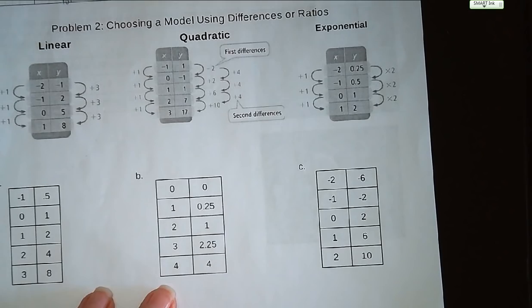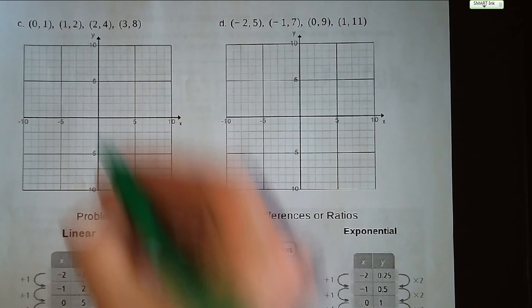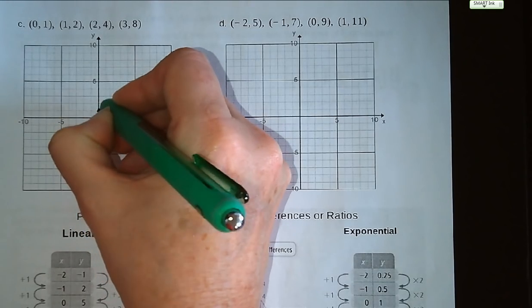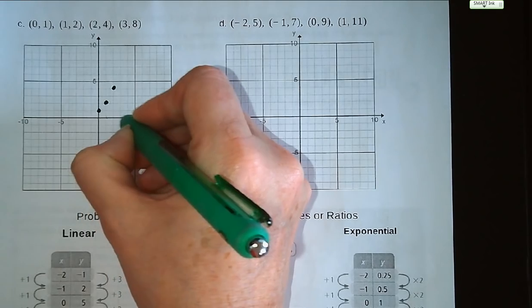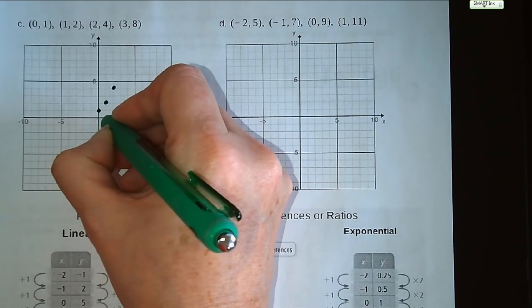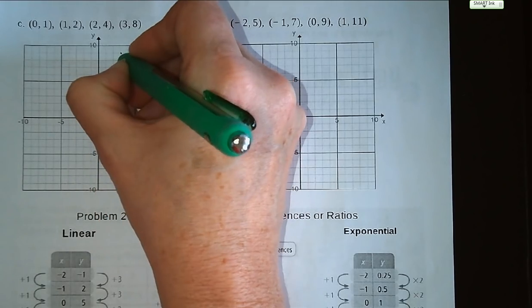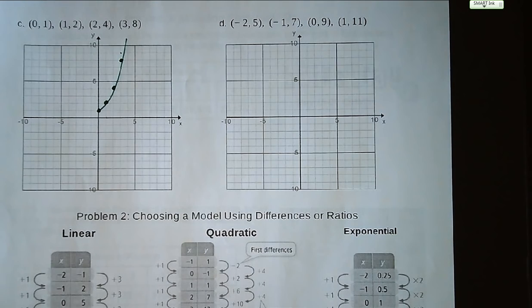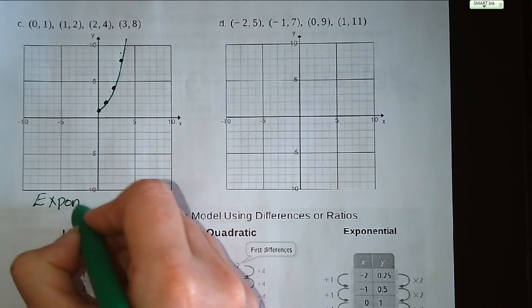I want you guys to try problems C and D on your own. So in problem C, we've got a point at (0, 1), (1, 2), (2, 4), and (3, 8). All right, so it looks like we're just growing, and it's only one side, so it's clearly exponential. That equation would be y = 2^x.